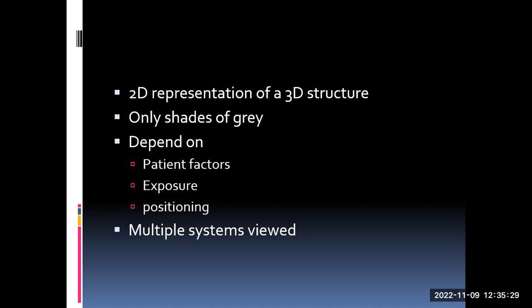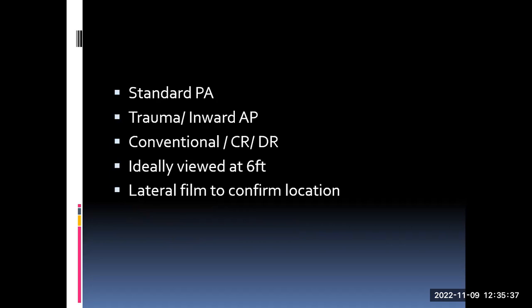It involves organs that belong to many systems. The standard X-ray we do is the posteroanterior radiograph, where the patient is standing and facing the cassette — the anterior chest wall is touching the cassette, which is where the film is kept. The X-ray beam enters the patient posteriorly, and that is the standard view we always look at. In certain circumstances, if the patient cannot stand upright or is in an ICU or ward setting where we use mobile X-rays, the image is anteroposterior: the beam enters anteriorly and the cassette is kept posteriorly.